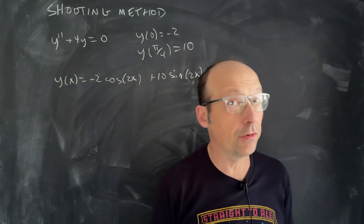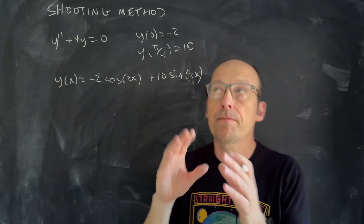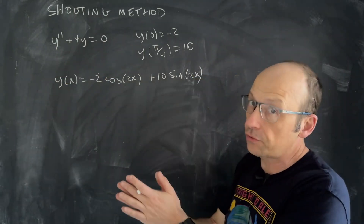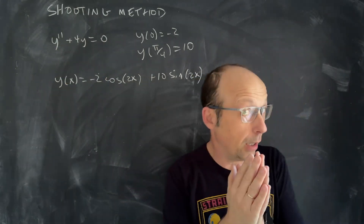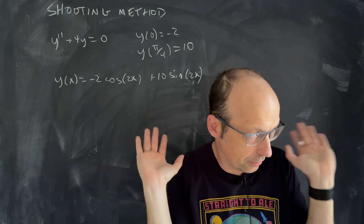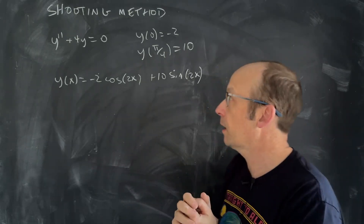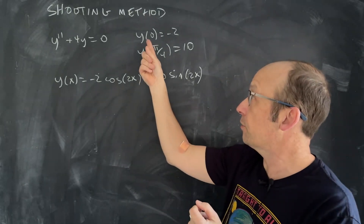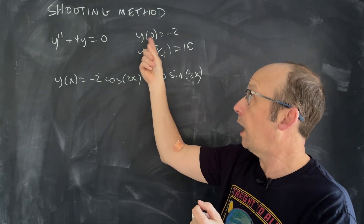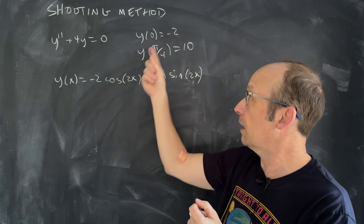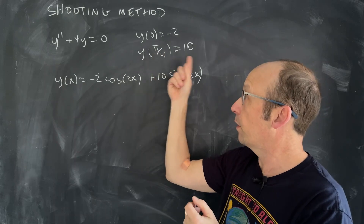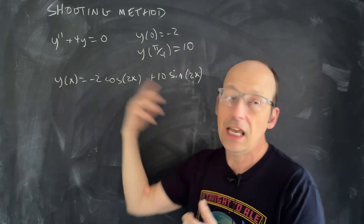That's the second derivative with respect to space. We use dots for time and primes for space — that's just what we do. The boundary conditions are: y at 0 is negative 2, and y at pi over 4 is equal to 10.